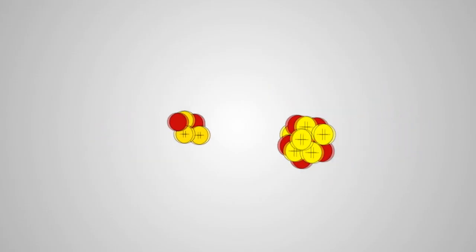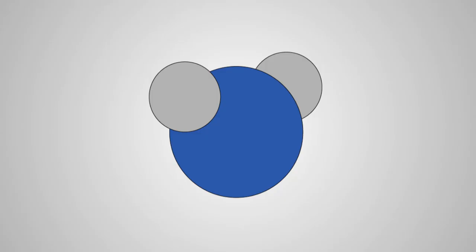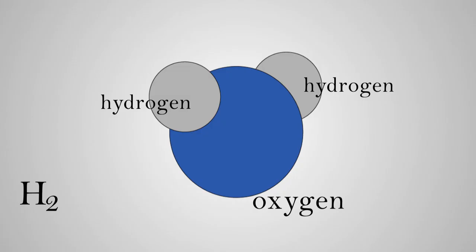Atoms can stick together to form other things. When atoms stick together, we call it a molecule. When two atoms of hydrogen and one atom of oxygen stick together, they make a molecule of water. Therefore, the elements of water are hydrogen and oxygen.